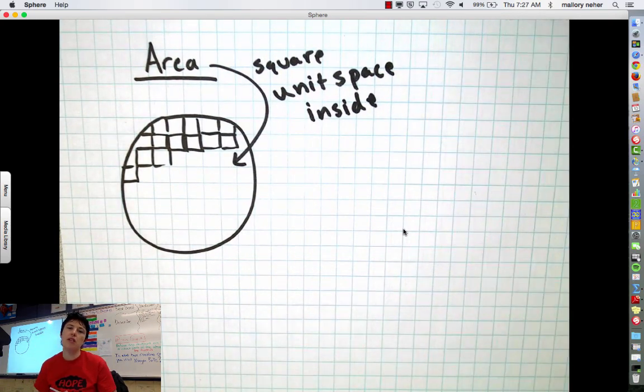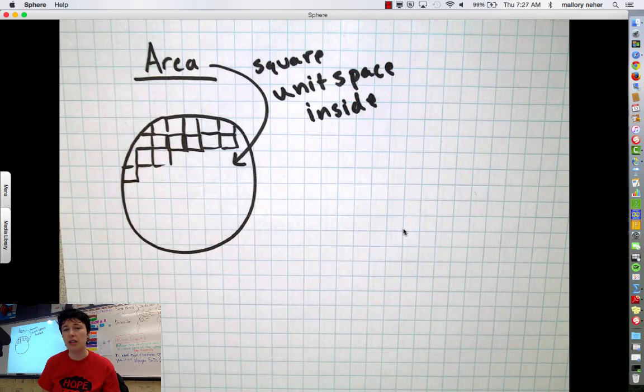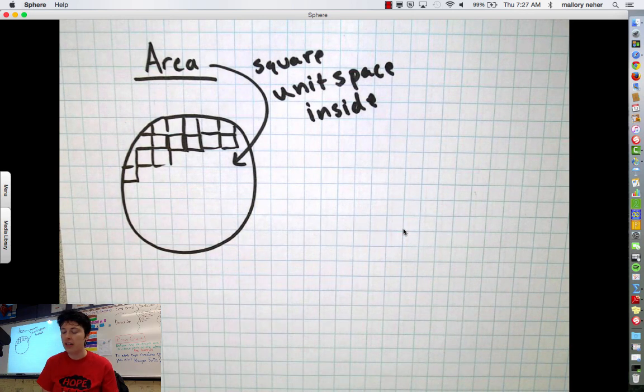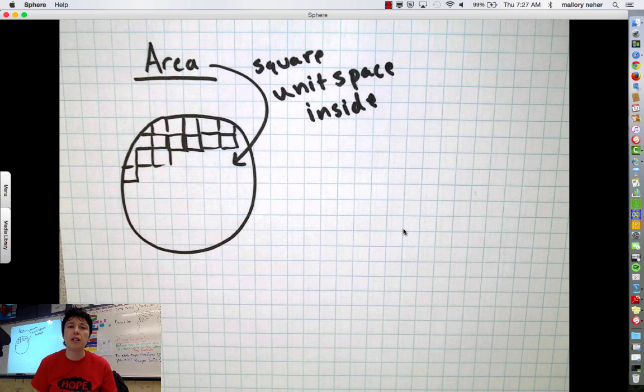A lot of times we use the example of carpeting a room. If you had to order carpet to put brand new carpet in your bedroom, you would order it by square unit. That's what they're going to ask you at the store. You probably don't have a circular bedroom, but you never know. You might need to find the area of a circle for some purpose.